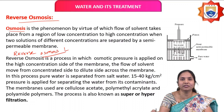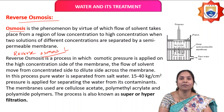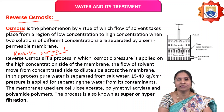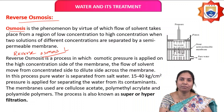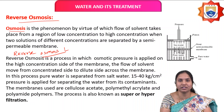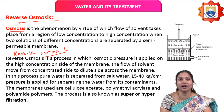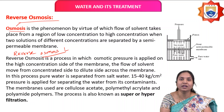In reverse osmosis, the process is reversed. When pressure is applied at the high-concentration side, the solvent flows from high concentration to low concentration — this is called reverse osmosis. That is why it is called reverse osmosis, and it is also called electrodialysis.